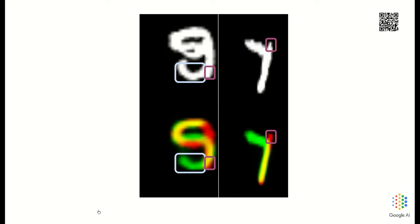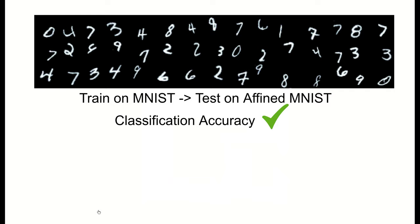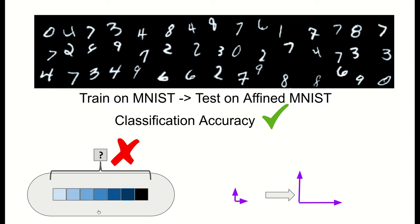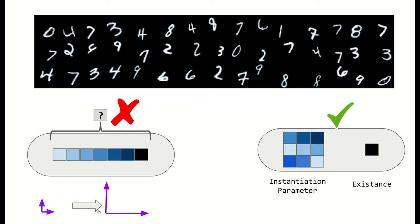To evaluate CapsNet viewpoint generalization, after training on MNIST digits, we test them on affine transformed MNIST test digits. And capsules show significantly better viewpoint generalization than baseline CNNs. But using the norm as a measure of existence is problematic. If a coordinate frame is scaled, it should have a larger norm as well. So we need to represent existence separate from the capsule coordinate frame representation. Now we need to find agreement and assignment for this new capsule with separate existence.